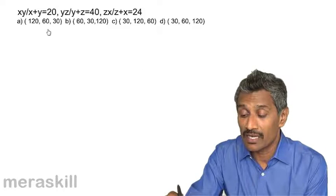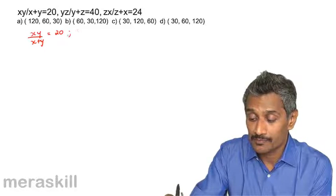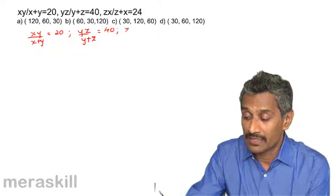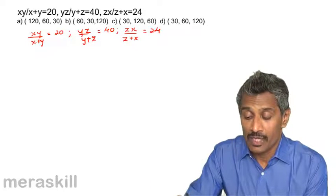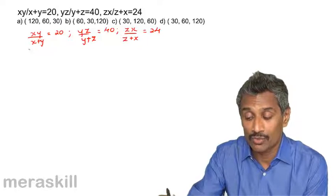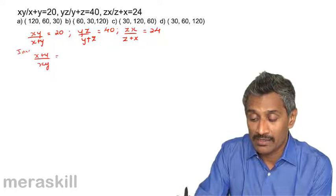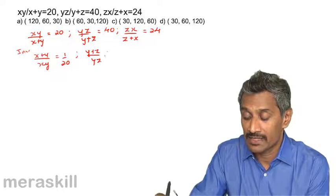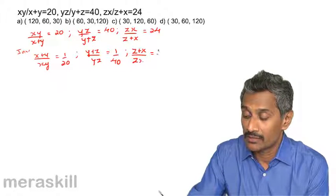Here we have an interesting case. We have xy/(x+y) = 20, yz/(y+z) = 40, and zx/(z+x) = 24. The best approach is to keep the variables simplified in the denominator, so we invert the ratios. We end up getting (x+y)/xy = 1/20, (y+z)/yz = 1/40, and (z+x)/zx = 1/24.